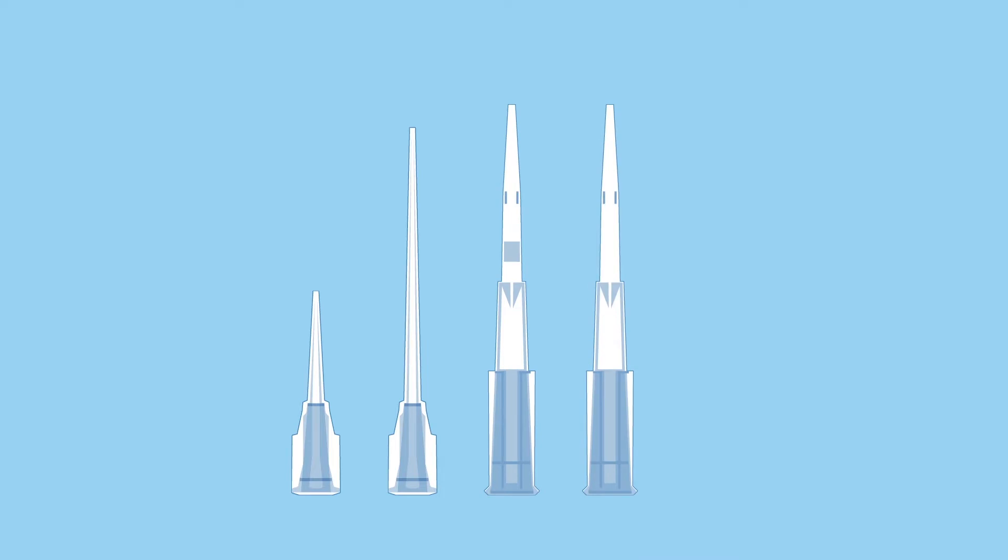Pipette tips come in a variety of formats and sizes that are appropriate for different applications. Tip types include standard, extended length, filtered and non-filtered, as well as tips designed specifically for automated liquid handling systems.